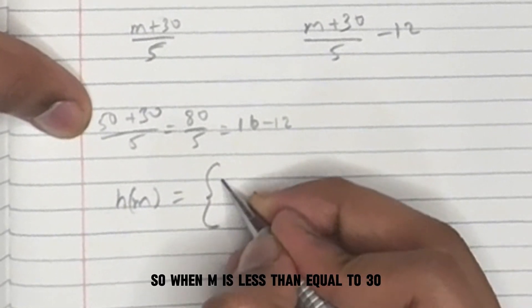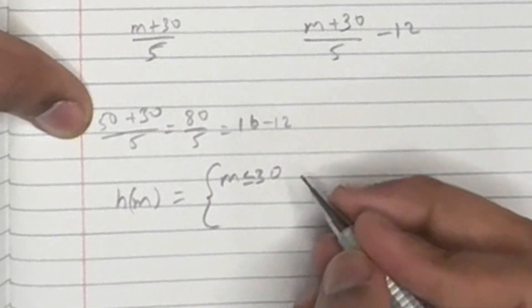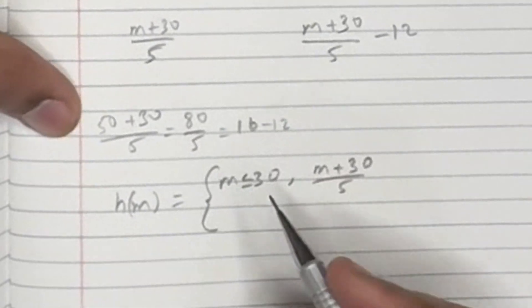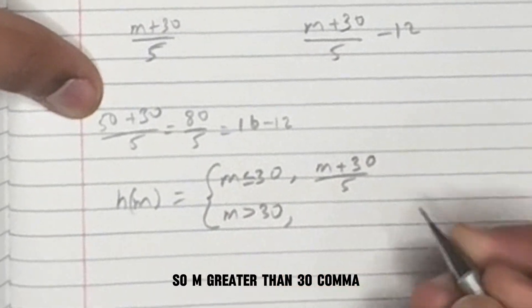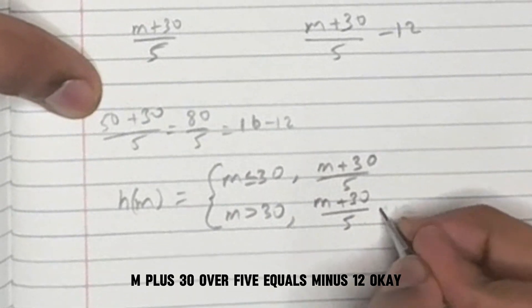So when m is less than or equal to 30, we use the first equation, which is m plus 30 over 5. If m is greater than 30, we use the second equation. So m greater than 30, m plus 30 over 5 minus 12.